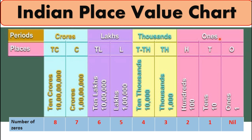Let us now look at the Indian place value chart. The Indian place value chart consists of 4 periods: ones, thousands, lakhs, and crores. The ones period is divided into 3 places: ones, tens, and hundreds. The other periods are divided into 2 places each. For example, the thousands period is divided into thousands and 10 thousands. Likewise, the lakhs period is divided into lakhs and 10 lakhs. Similarly, the crores period is divided into crores and 10 crores.